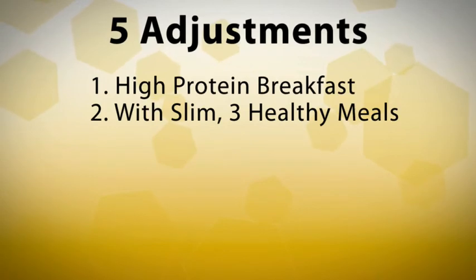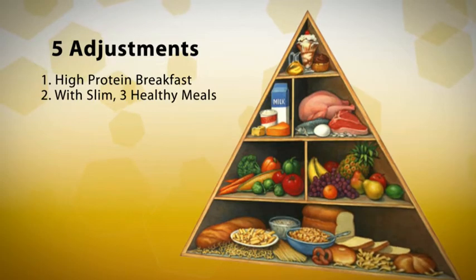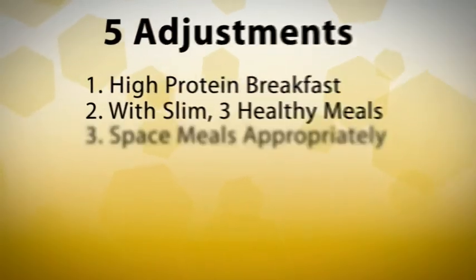Number 2. Along with BIOS Life Slim, eat 3 healthy, well balanced meals that include lean protein, healthy fats, and complex carbohydrates.